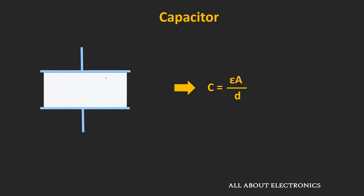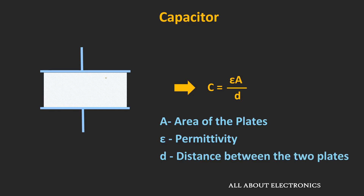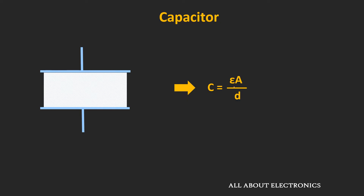For a parallel plate capacitor, the capacitance can be given as C = εA/D, where A is the area of the plate, ε is the permittivity of the dielectric material, and D is the distance between the two plates or the thickness of the dielectric material. For a fixed value of ε and A, if we change the distance between the two plates — or in other words, the thickness of the dielectric medium — then the capacitance will change. With this same concept, the capacitance of the varactor diode is varied.